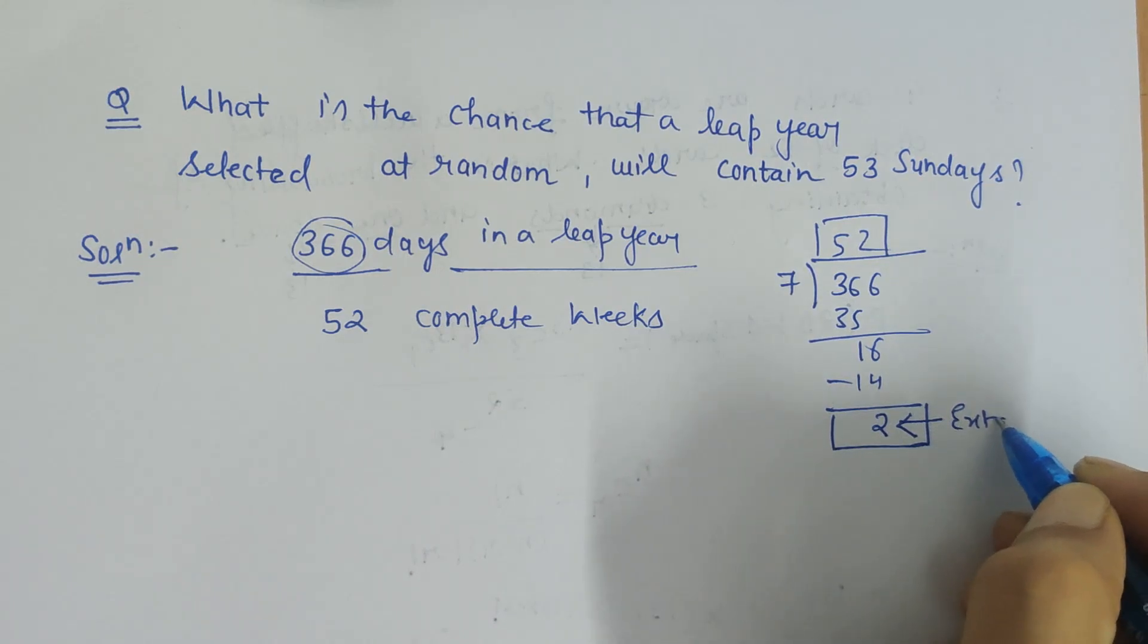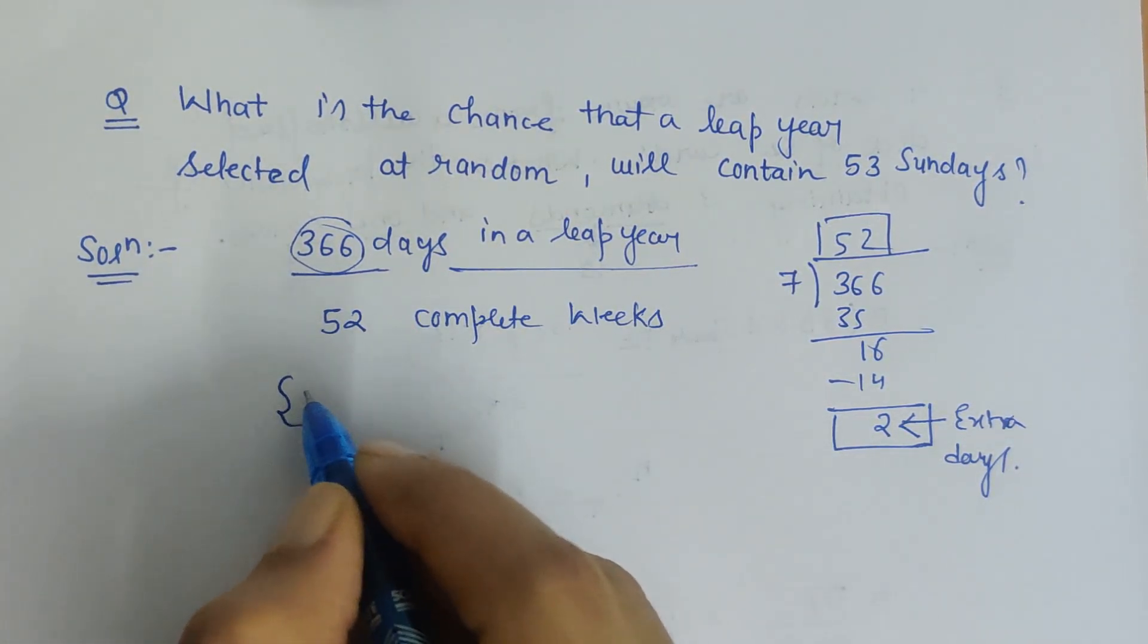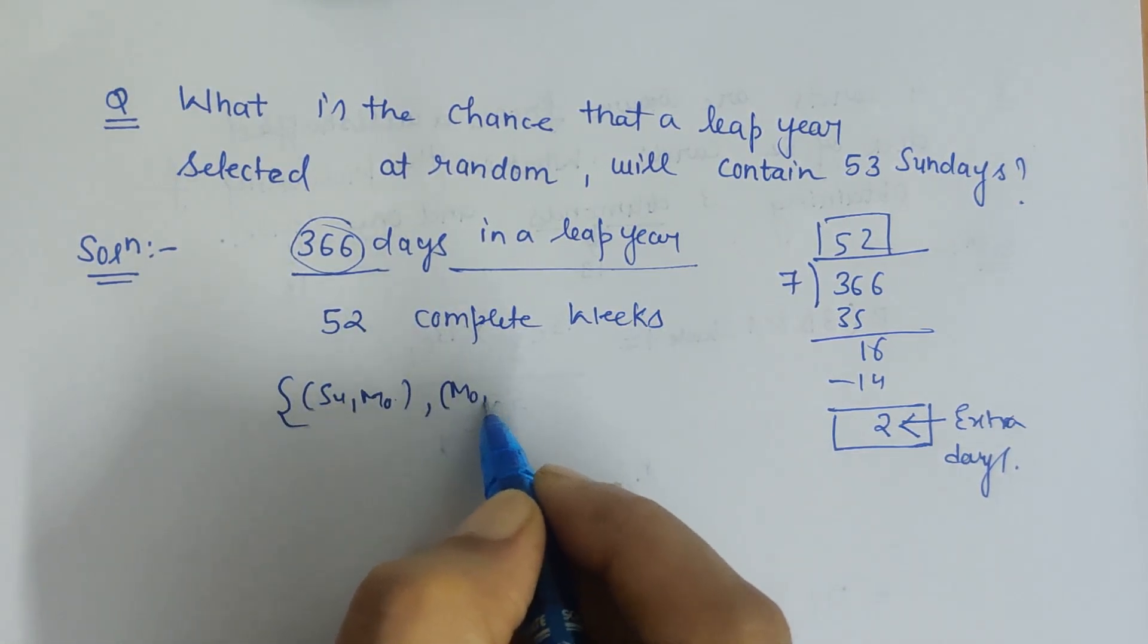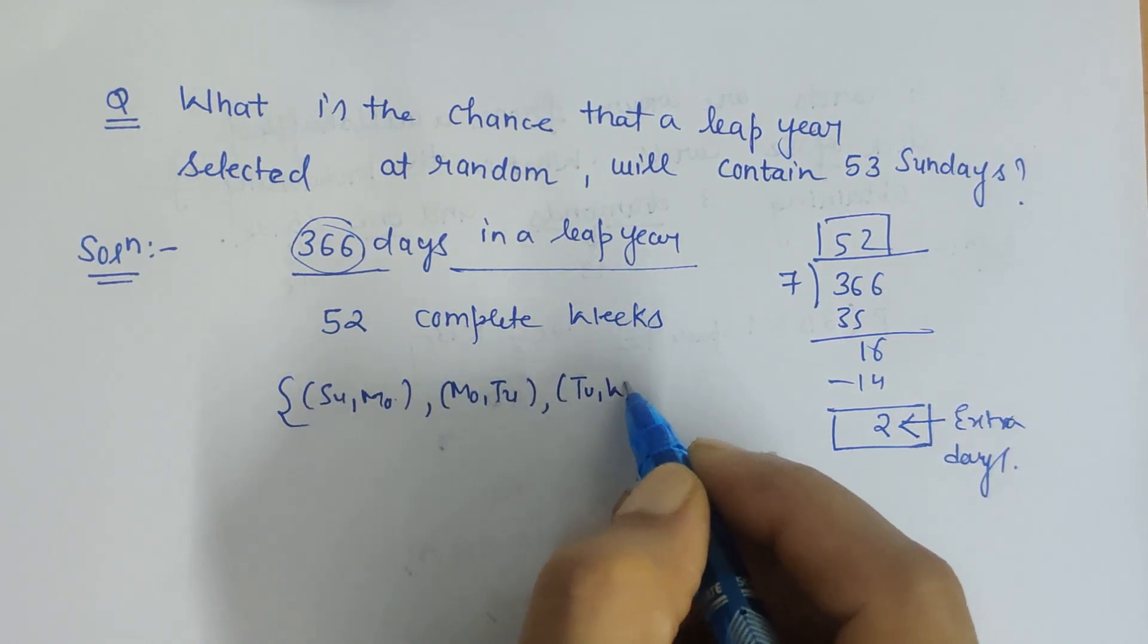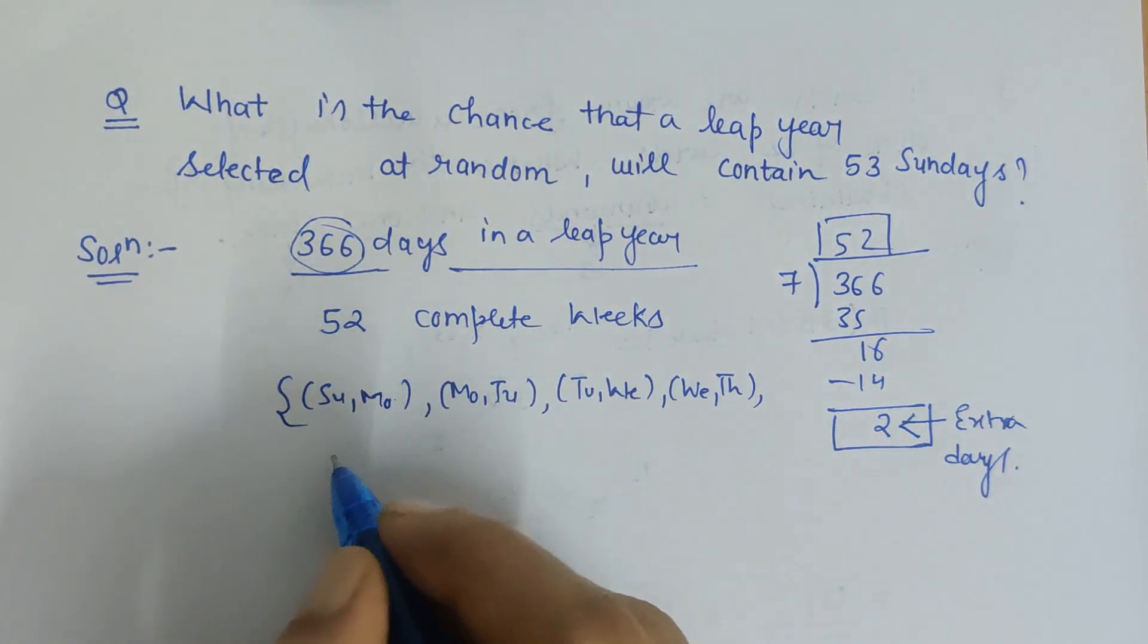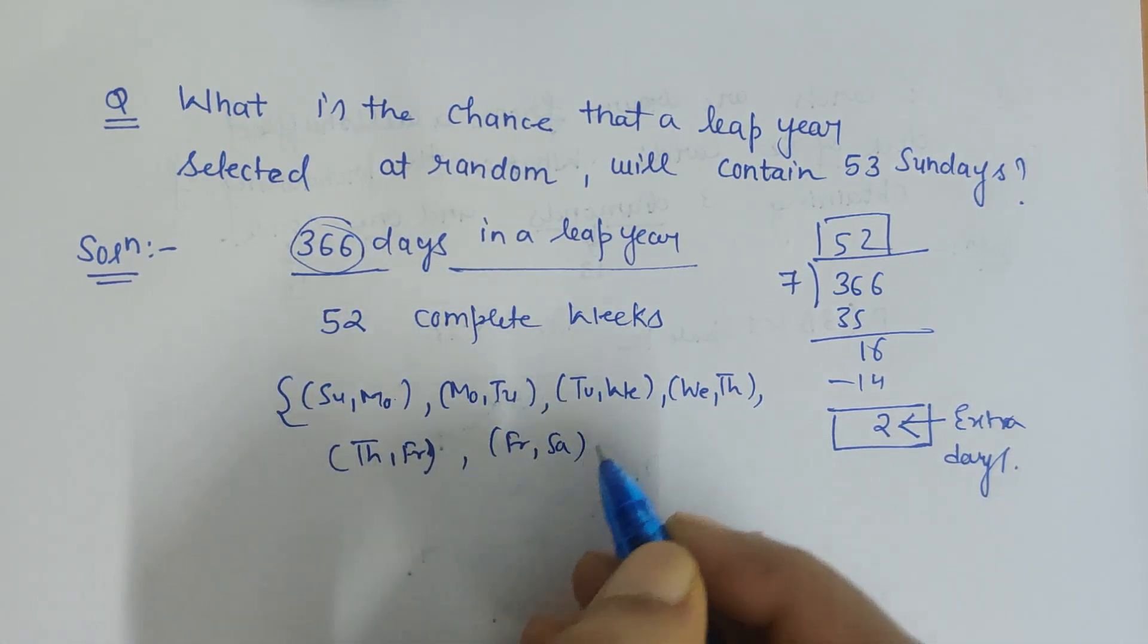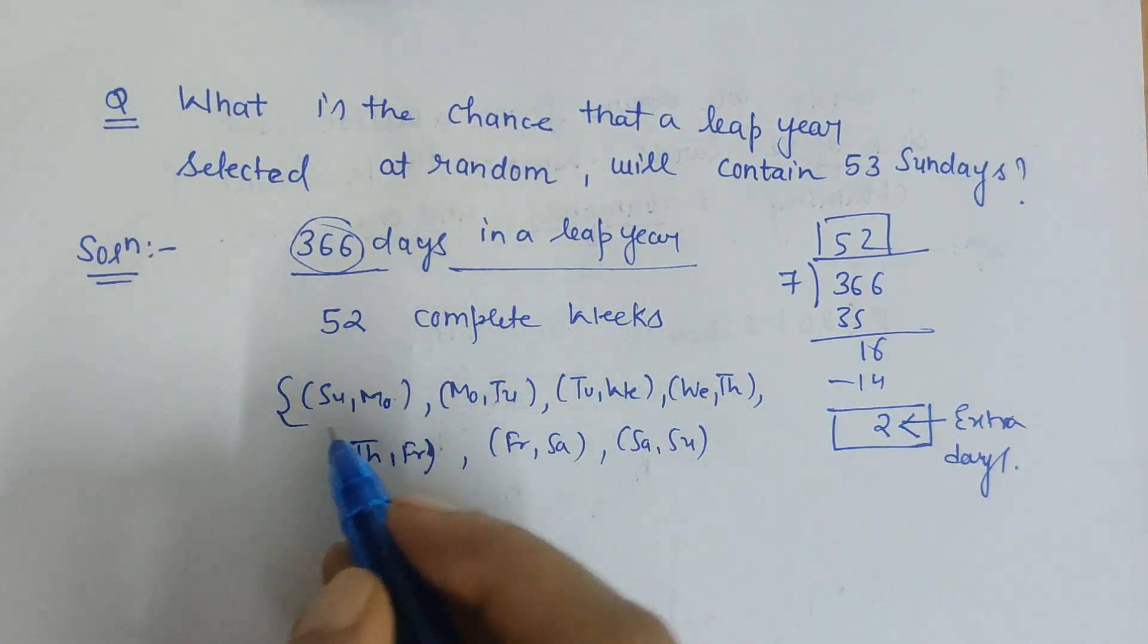Now these two consecutive days might be Sunday-Monday, might be Monday-Tuesday, might be Tuesday-Wednesday, might be Wednesday-Thursday, or Thursday-Friday, or Friday-Saturday, or Saturday-Sunday. One, two, three, four, five, six, seven - so there are seven possibilities for the extra two consecutive days.